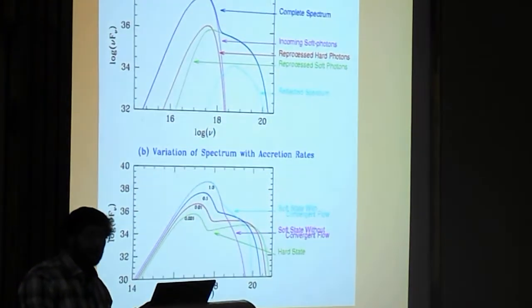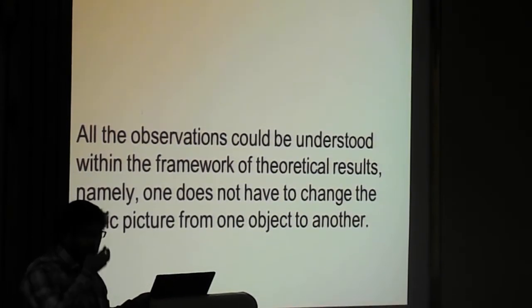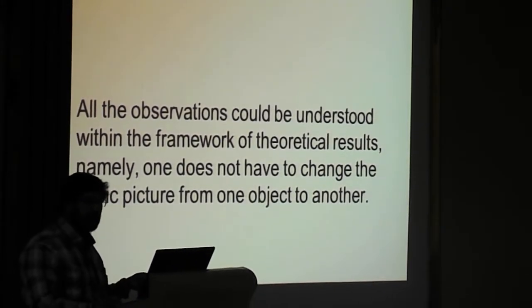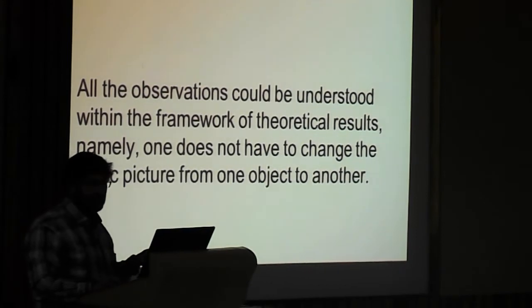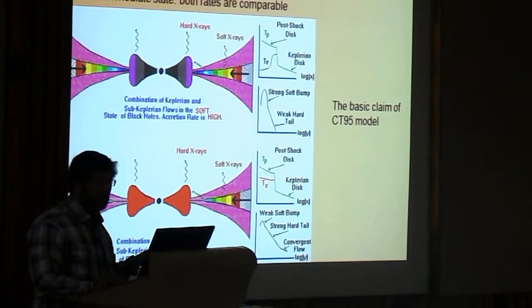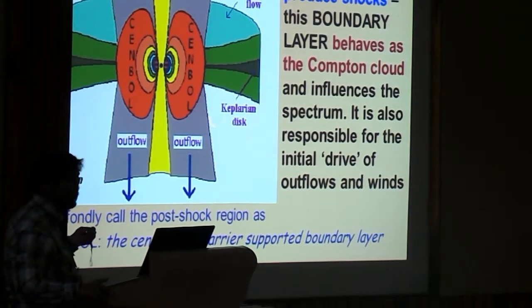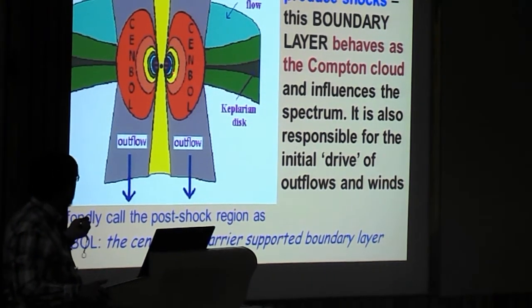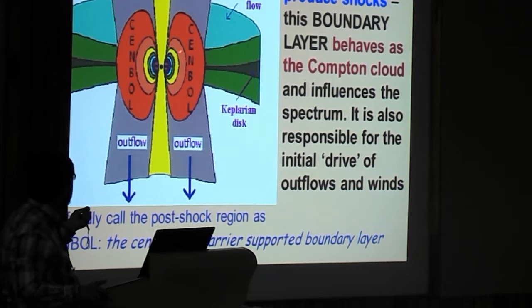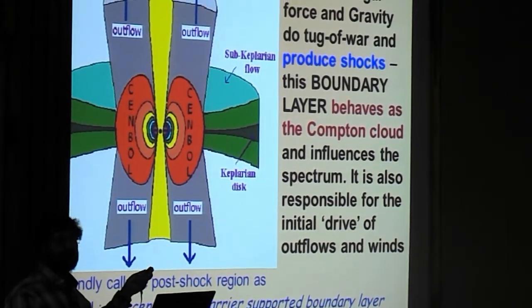So, if I have high accretion rate, then it produces large amount of soft photons, black body photons, and we have, let us say, some accretion rate of sub-Keplerian component. That component produces a post shock region and is cooled down by Compton scattering by this soft photon. So, once it is cooled down, the spectrum is soft and we call it a soft state of the black hole. So, if the accretion rate is very small, the accretion rate is very large, you cannot cool down all the electrons. So, you have a hard state.